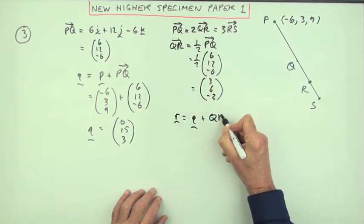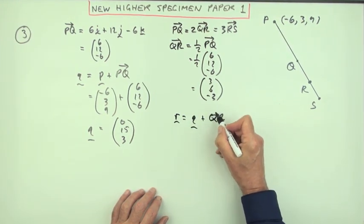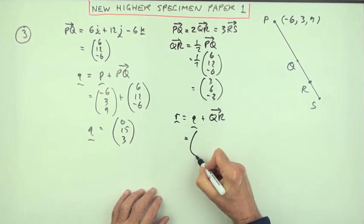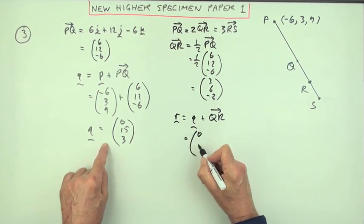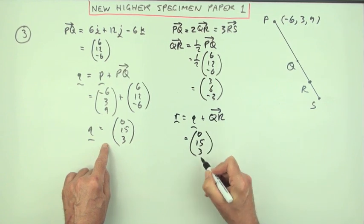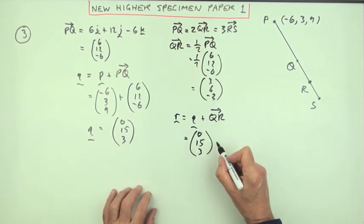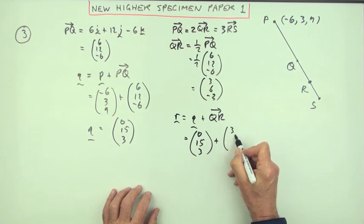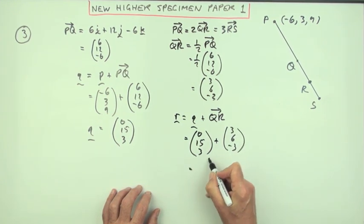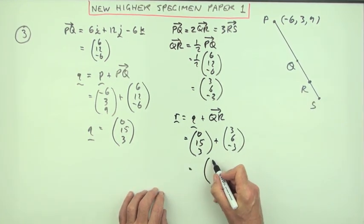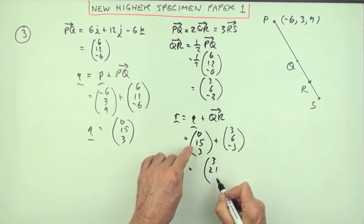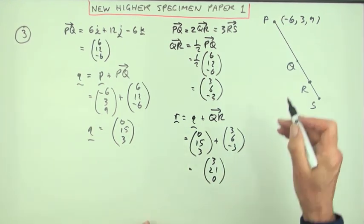So R's going to be start at Q and follow the instructions, follow displacement, follow the vector QR. What was Q again? Here it was - notice how I didn't actually need the coordinates because I just wanted that part of it - plus 3, 6, -3. And now I've got myself on to R, that's going to be 3, 21, 0.